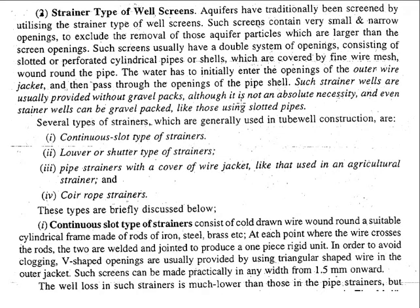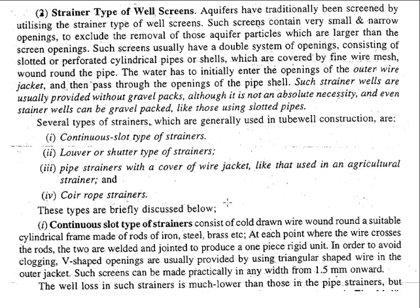Looking at the various types, the strainer type well screen is basically classified into four categories: continuous slot type strainer, louver or louvre type strainer, a pipe strainer with a wire jacket cover mainly used for agricultural purposes, and a coir rope type strainer.